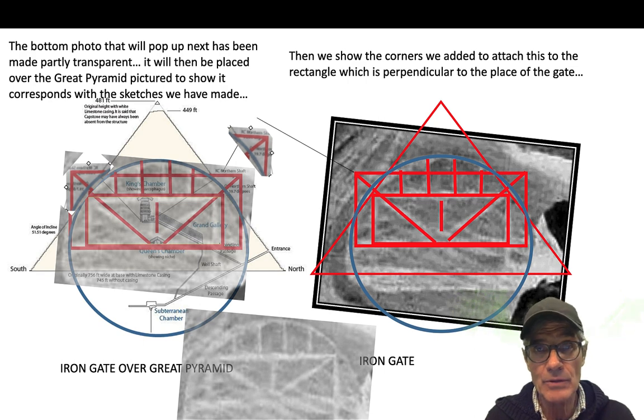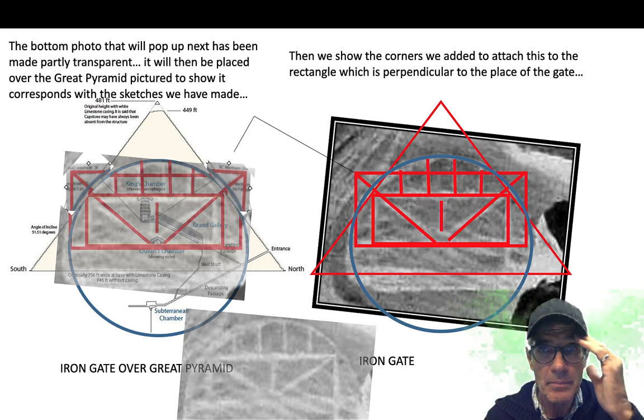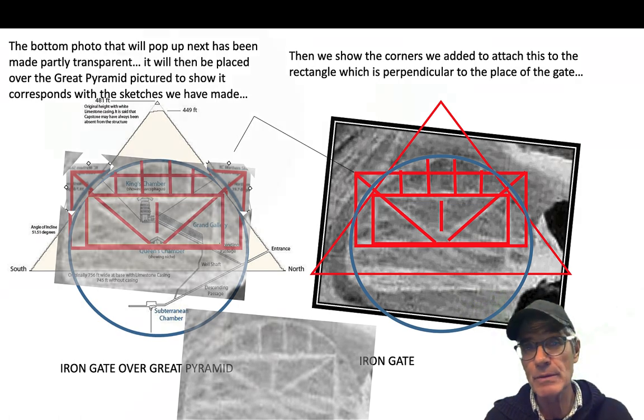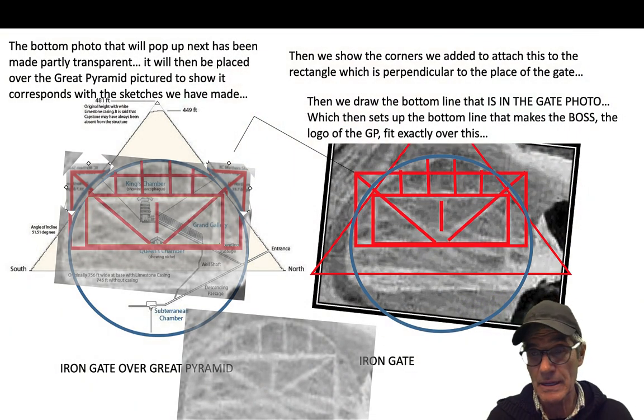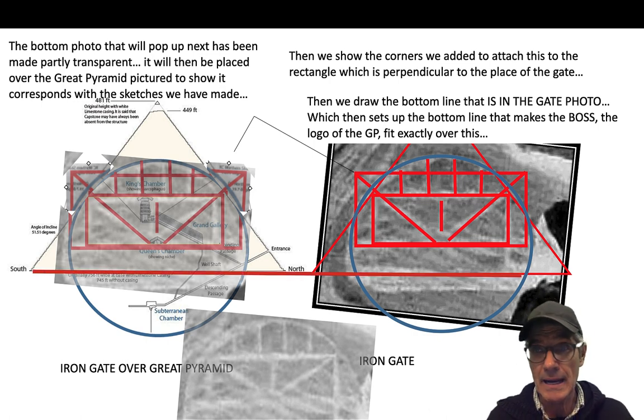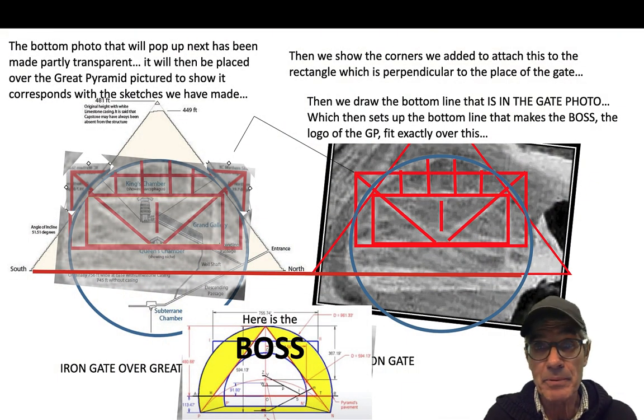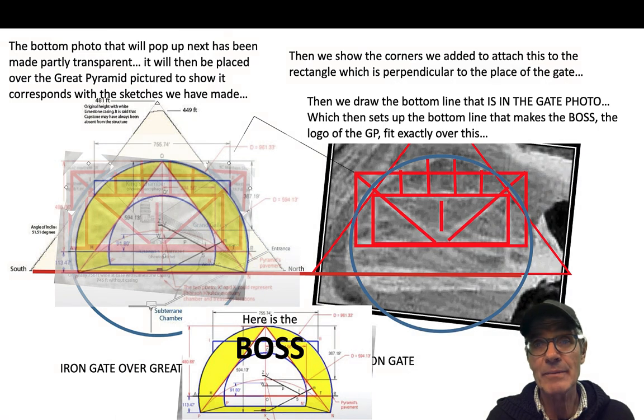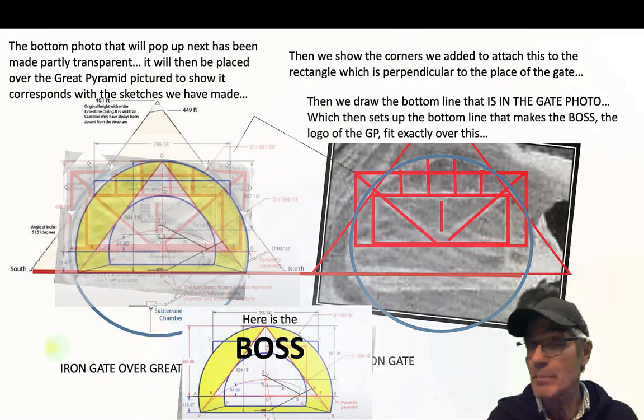I added the two corners there, but they're implied in everything else that's there. The Hemiunu template does seem to fit there without forcing anything. If you take the bottom line that's in the gate photo, that really sets up a place for the boss to sit. The boss is like the logo of the entire pyramid, the design of the pyramid.